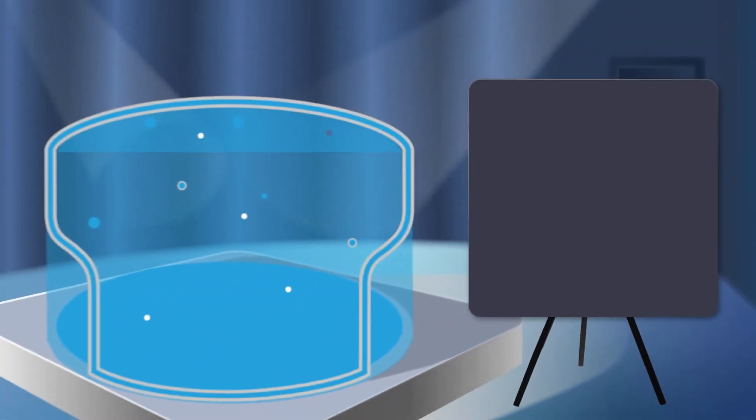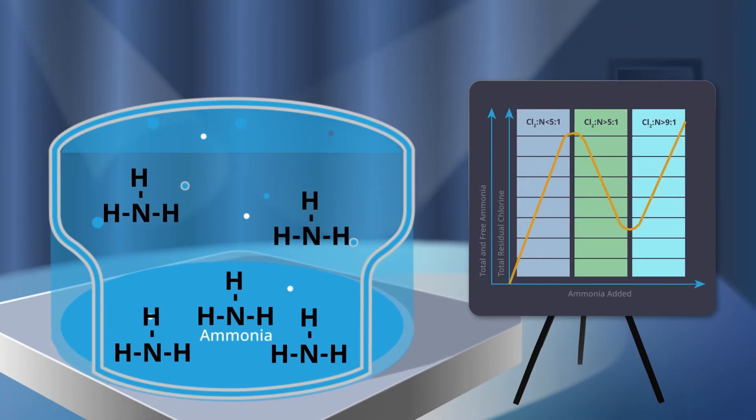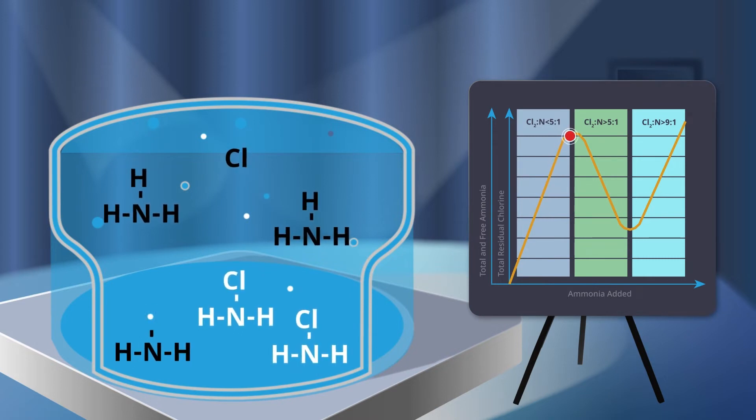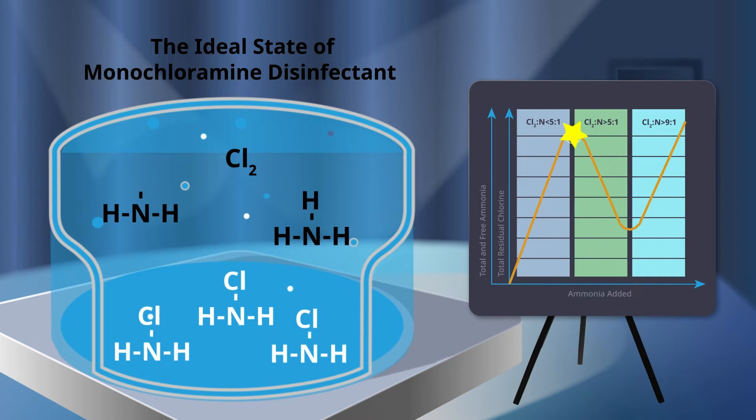You are trying to create monochloramine. In substitution reaction, the ammonia drops a hydrogen atom and the chlorine atom takes its place. When you have effectively bonded one chlorine from hypochlorous acid molecule, or hypochlorite ion, with each ammonia molecule,